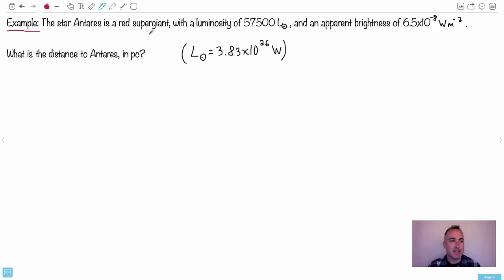Now, let's do an example. So we have an example here. A star Antares. That's a red supergiant. It actually looks beautiful in the night sky. Antares. It's a red supergiant. It has luminosity of 57,500 L with a little circle. Do you remember what that means? That's the luminosity of the Sun. So it's 57,000 times more luminous than our Sun. And by the way, we're told, the luminosity of the Sun is this value right here, 3.83 times 10 to the 26 watts. Has an apparent brightness of 6.5 times 10 to the minus 8 watts per meter squared. So all the units are okay. You should always watch out for that on exams. Watch out for them messing around with units. But here they're all okay. What's the distance in parsec?